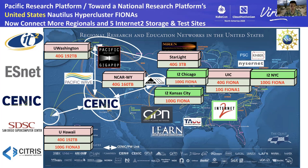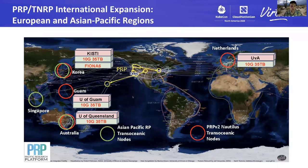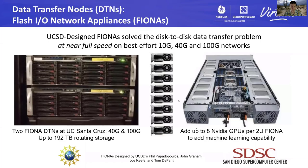On an international scale, we have nodes in Europe, in the Asia-Pacific region — we have nodes in Singapore, Korea, Guam, and Australia. The nodes themselves are called FIONA nodes — Flash IO Network Appliances. Those nodes are optimized for fast networks so they can actually leverage those speeds. Some nodes can fit up to eight gaming GPUs, and some nodes have a bunch of hard disks which we use for storage for our Ceph cluster.